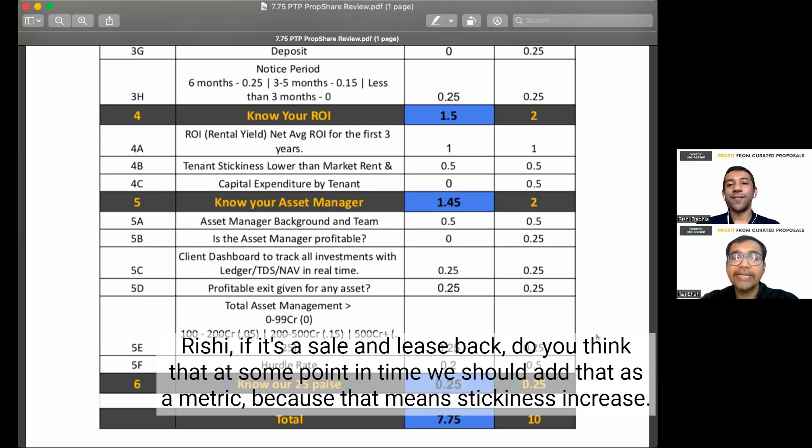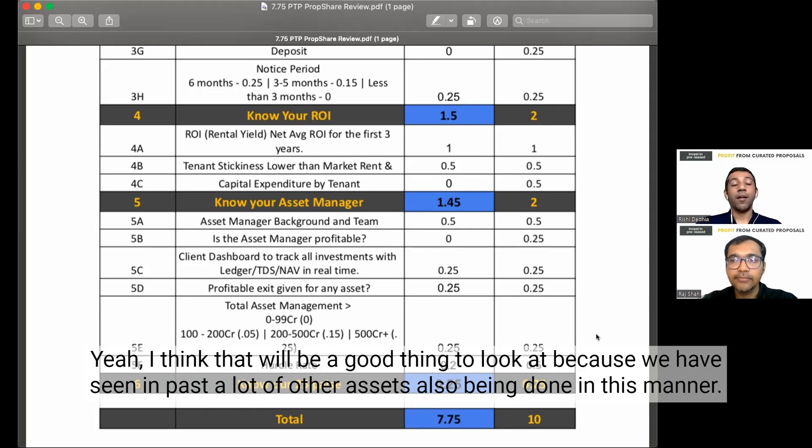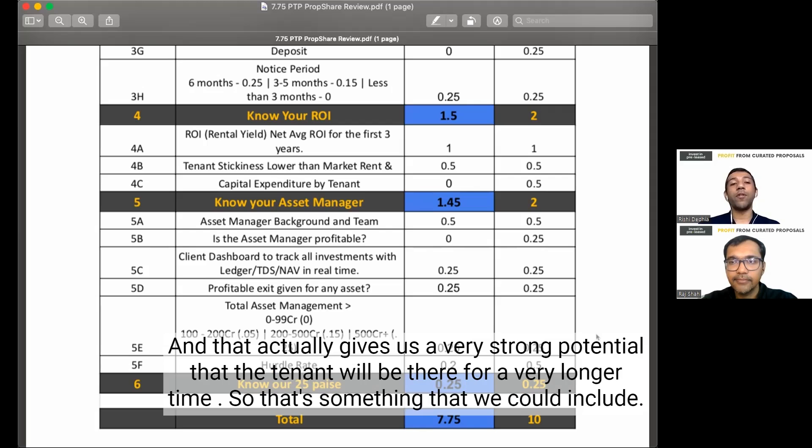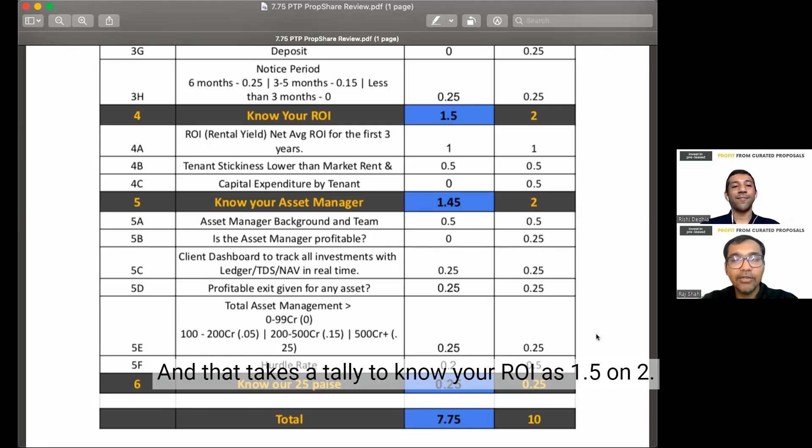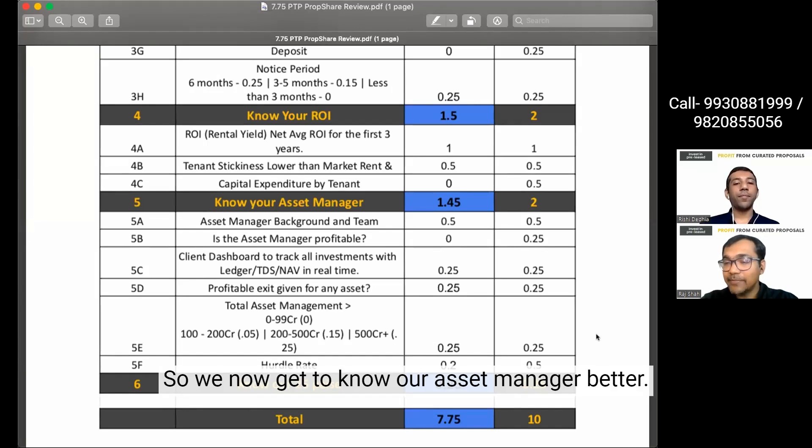If it's a sale and leaseback, do you think that at some point in time we should add that as a metric because that means stickiness increases? Yeah, I think that will be a good thing to look at because we have seen in past a lot of other assets also being done in this manner and that actually gives us a very strong potential that the tenant will be there for a very stronger time. So that's something that we could include. Please comment and let us know if you think we should include this and that takes a tally to know your ROI as 1.5 on 2.